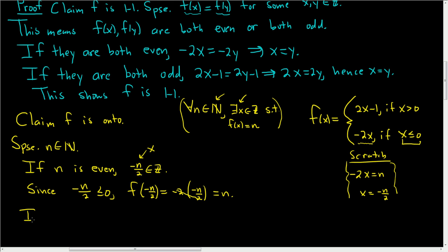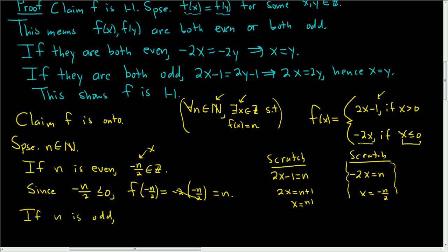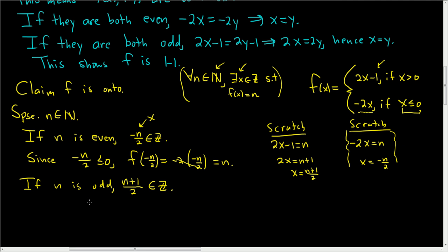Now let's take the case where n is odd. We need to find our x. In scratch work: since little n is odd, f of something needs to give us little n, so n has to equal 2x minus 1. We set 2x minus 1 equal to n, add 1 to both sides, and solving for x we get x equals (n plus 1) over 2. Little n is odd, so n plus 1 is even and divisible by 2, so (n plus 1) over 2 is an integer.